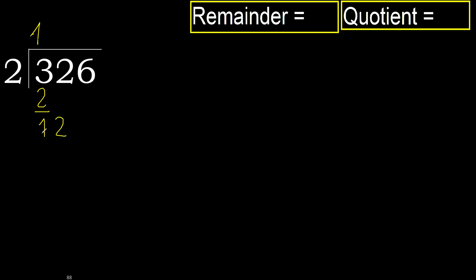Next: 12. 2 multiplied by 6 is 12, which is not greater. Subtract 0.